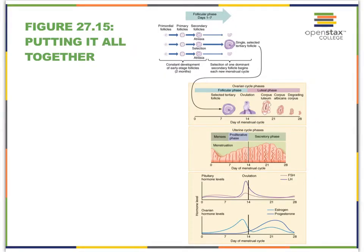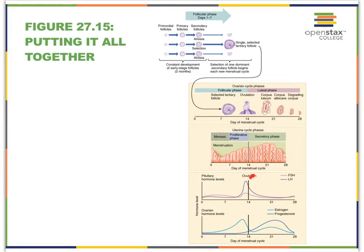Here we see the images we're pretty familiar with from the previous video. At the top we see the maturation of the follicles — folliculogenesis to the Graafian follicle. Then we see the three phases that occur in the ovary: the follicular phase, ovulation, and the luteal phase. And how that relates to the three phases in the uterus: menses or menstruation, then the proliferative phase when the endometrium starts to build up, and then the secretory phase when the endometrium matures. Followed by the various hormones we'll take a closer look at in the next slides.